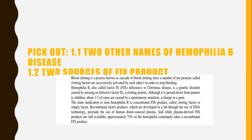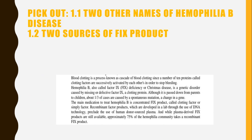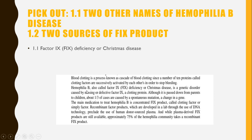For the first question, we need to pick out two other names for hemophilia B disease. From the text in document one: blood clotting is a process known as the cascade of blood clotting, since ten proteins called clotting factors are successively activated by each other to stop bleeding. Hemophilia B is also called Factor IX deficiency or Christmas disease — these are the two other names for hemophilia B.